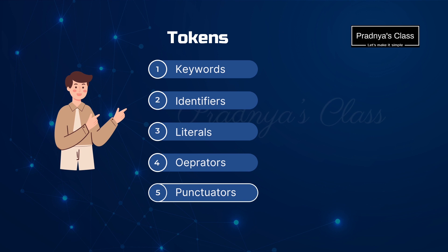The most important topic of this chapter is tokens. Here are the five tokens that we have studied in class 11 as well as in class 12. Out of these, you will be focusing on the keyword, identifier, and operators.